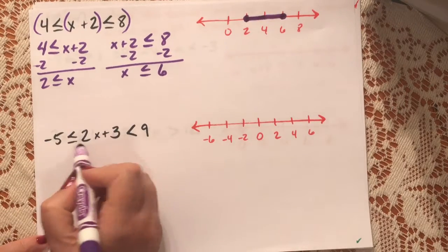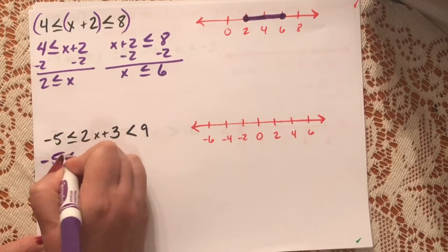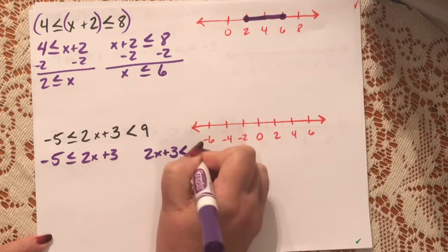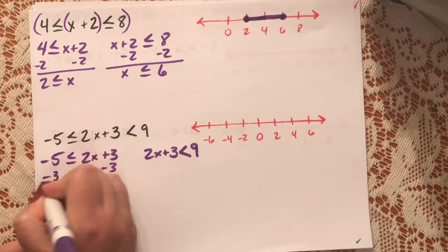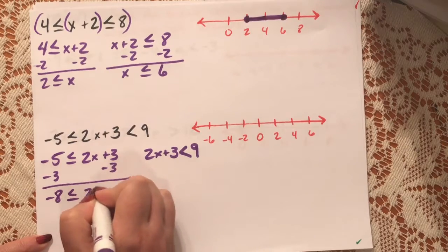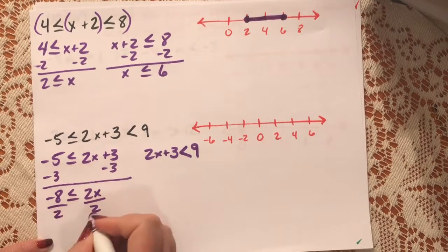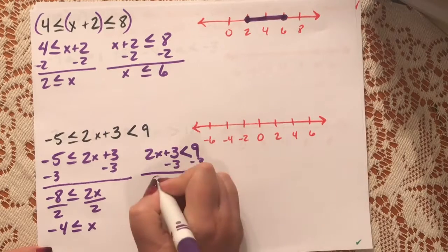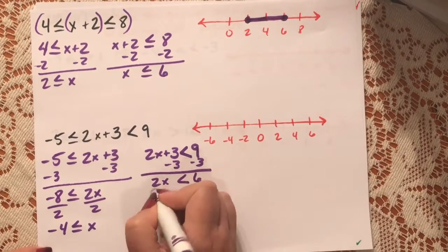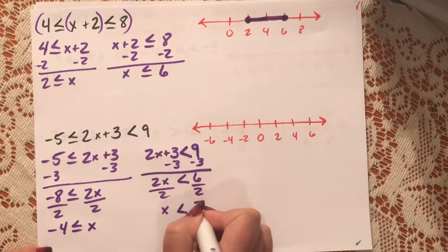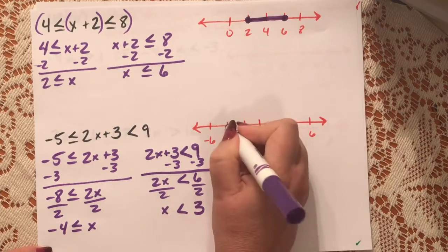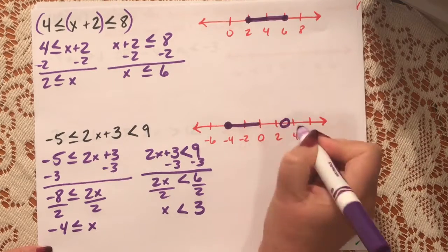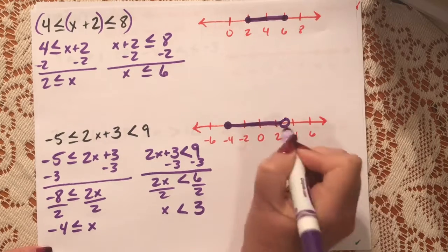Our next one is very similar. We're going to look at negative 5 is less than or equal to 2x plus 3, and 2x plus 3 is less than 9. Subtract 3 from both sides: negative 8 is less than or equal to 2x. Divide by 2: negative 4 is less than or equal to x. Subtract 3 from both sides of the second: 2x is less than 6. Divide by 2: x is less than 3. So we have a closed circle at negative 4, and an open circle at 3 — and this is our intersection.